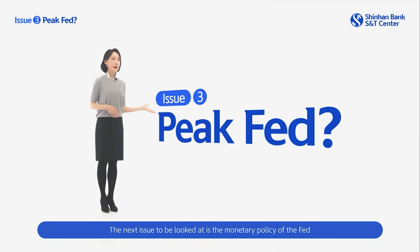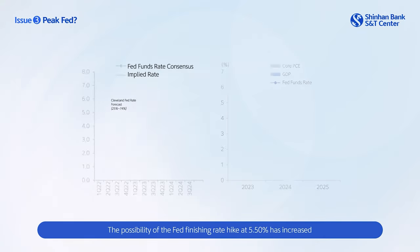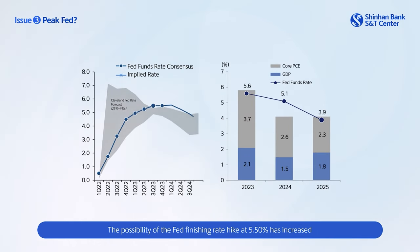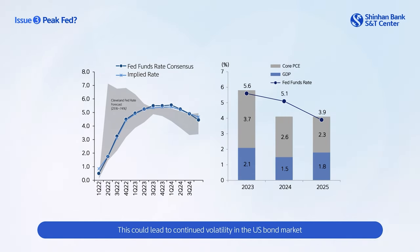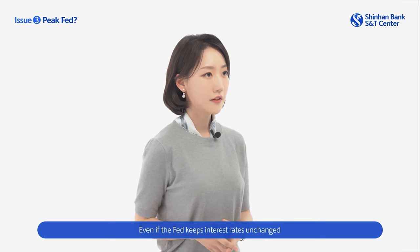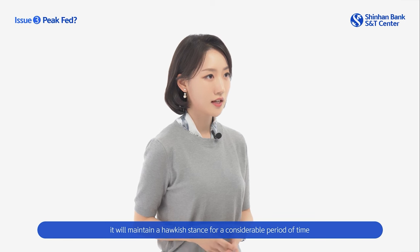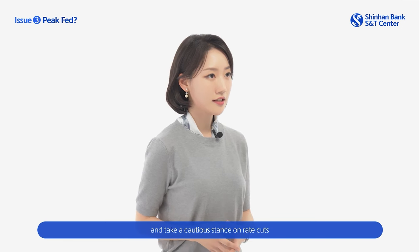Next is the monetary policy of the Fed, which stands at the center of the global financial market. The possibility of the Fed finishing rate hikes at 5.5% has increased following the November FOMC meeting. But the Fed's future course of action still remains uncertain, and it's questionable whether the U.S. would easily implement fiscal tightening ahead of the election. This could lead to continued volatility in the U.S. bond market. And even if the Fed keeps interest rates unchanged, it'll maintain a hawkish stance for a considerable period of time and take a cautious stance on rate cuts.